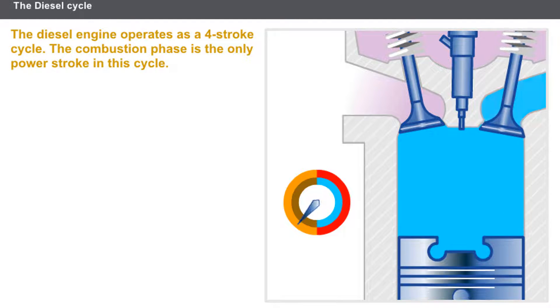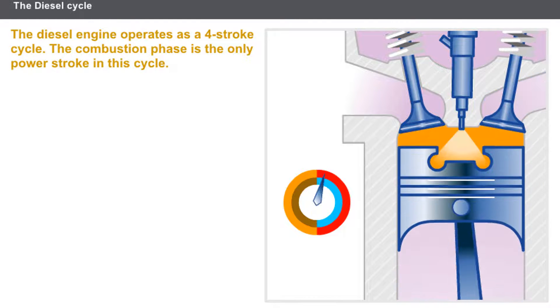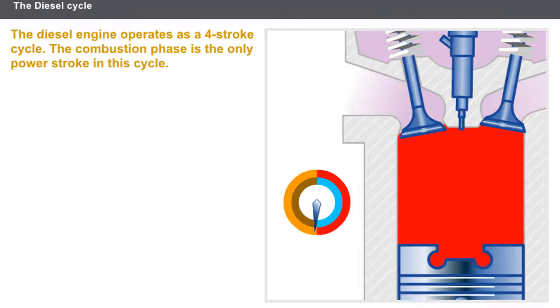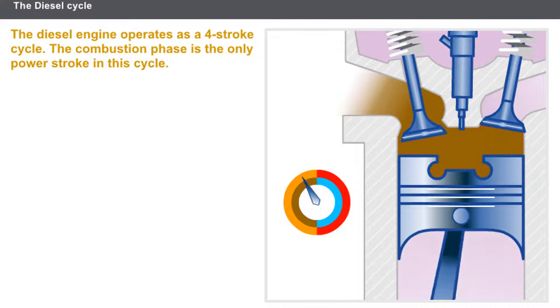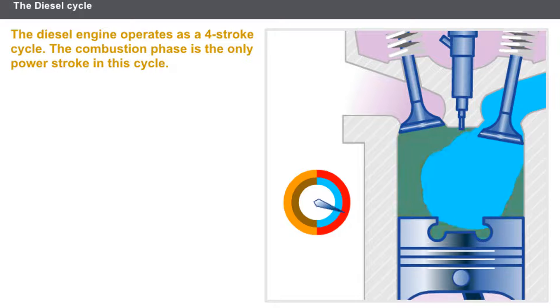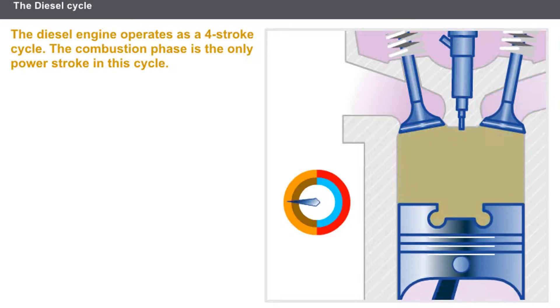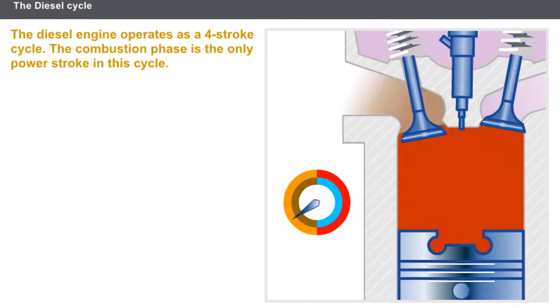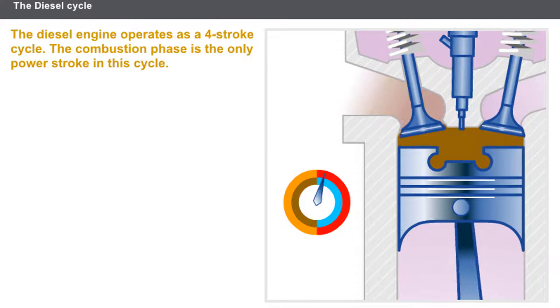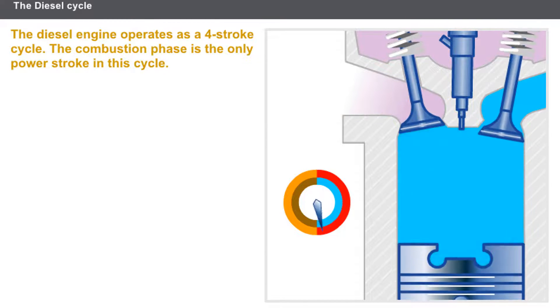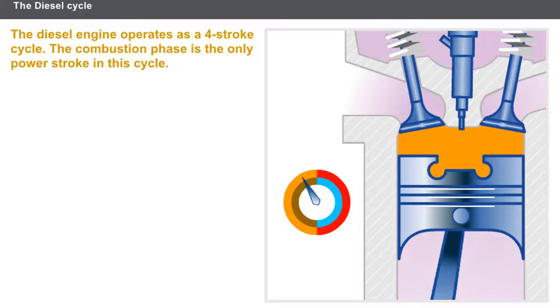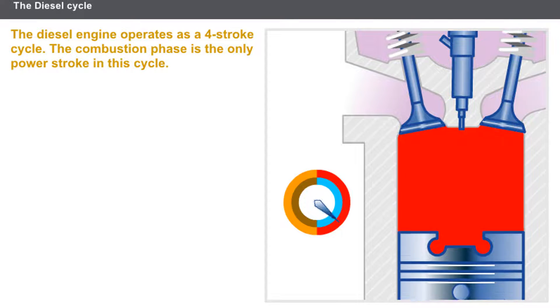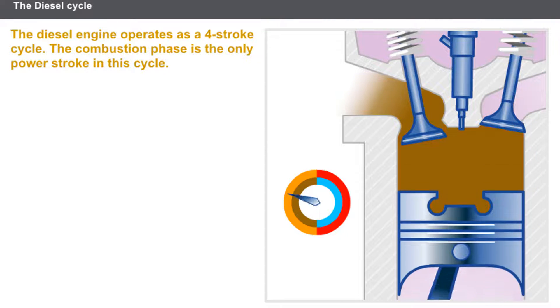The diesel engine operates as a four-stroke cycle. The combustion phase is the only power stroke in this cycle. We will be detailing the different strokes in the diesel cycle on the following screens.